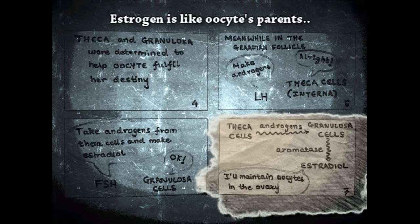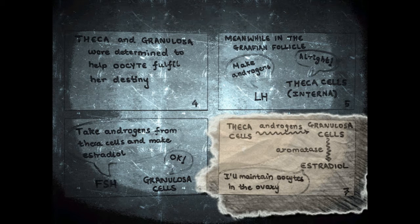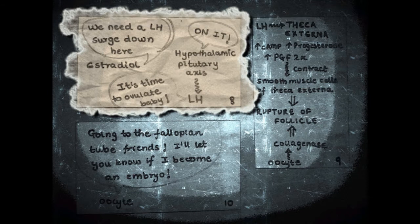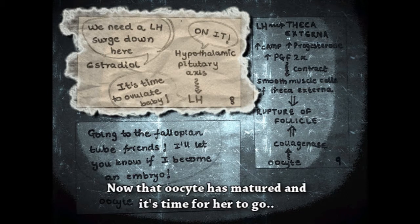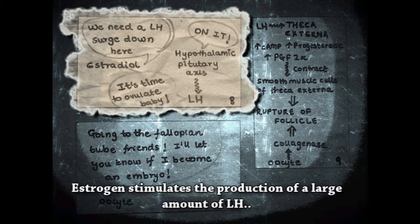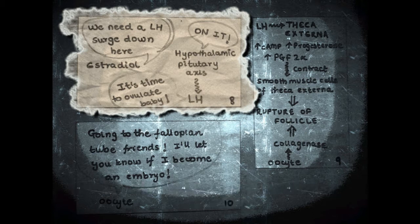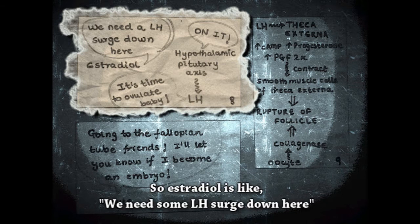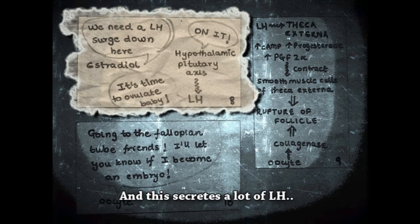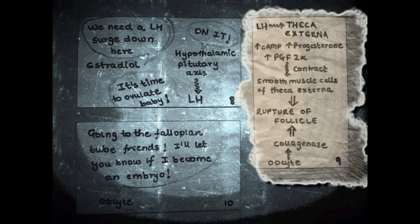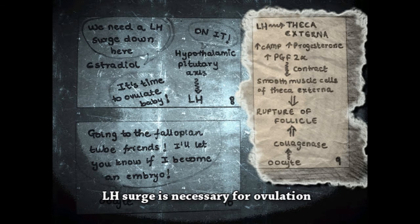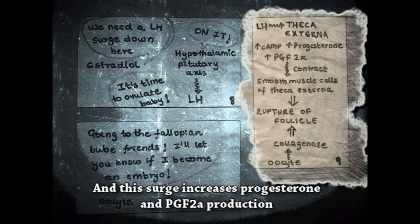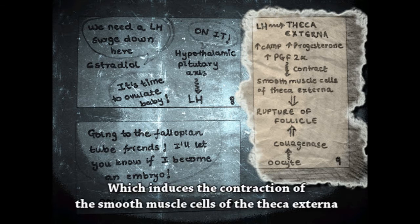Estrogen is like the oocyte's parent — it had inhibited LH because the oocyte was immature. Now that the oocyte has matured and it's time for her to go, estrogen stimulates the production of a large amount of LH. The LH surge is necessary for ovulation. Estradiol signals the need for an LH surge, and the pituitary secretes a lot of LH. LH is necessary for ovulation, and the surge increases progesterone and PGF2 alpha production, which induces contraction of the smooth muscle cells of the theca externa.